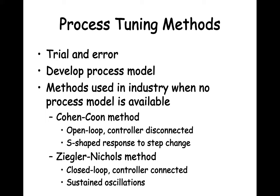The method to use will depend on whether the controller is disconnected during tests run to collect data needed, or whether the controller is connected. If you use the open loop method, the controller is disconnected and the response will be S-shaped — you will be using the Cohen-Kuhl method. If you use the closed loop method, the controller is kept in the process control system, the response wanted is sustained oscillations, and you will be using the Ziegler-Nichols method.